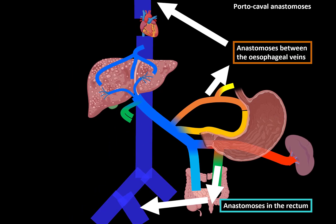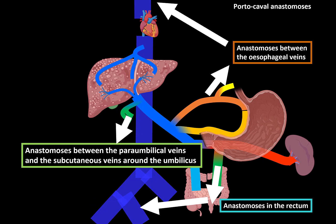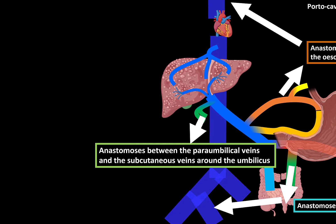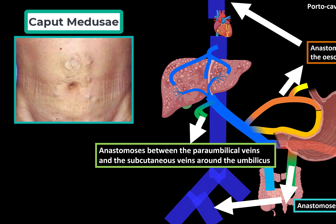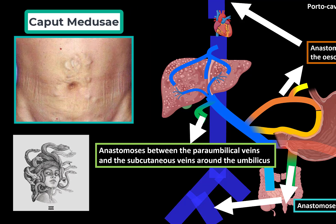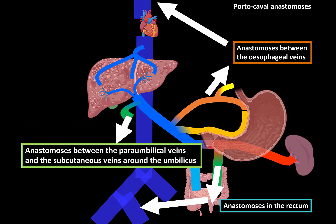There's an anastomosis between the para-umbilical and subcutaneous veins around the umbilicus. When these veins enlarge, they are called Caput Medusae, or Head of the Medusa — named for the apparent similarity to Medusa's head with venomous snakes as hair. These anastomoses occur between the thoraco-epigastric veins, which open into the axillary vein, and the superficial epigastric veins. This condition is very characteristic of portal hypertension.